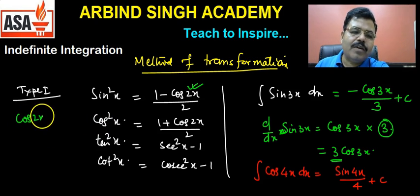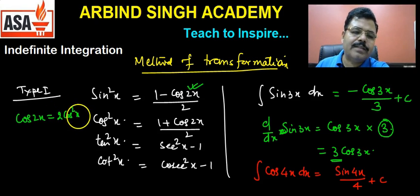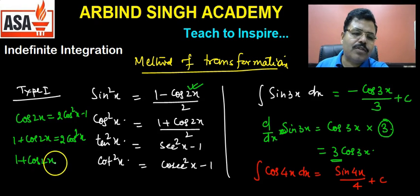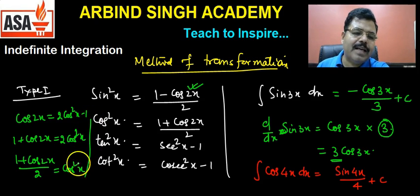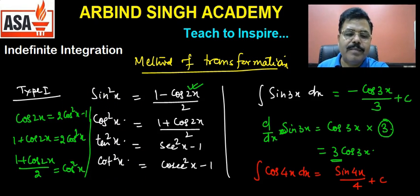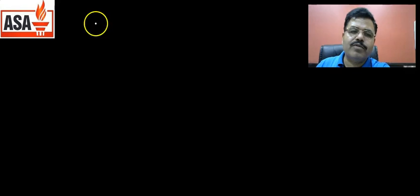Let's see why cos²x = (1 + cos2x)/2. The formula for cos2x is 2cos²x − 1. Bringing −1 to the other side: 1 + cos2x = 2cos²x. Dividing both sides by 2: (1 + cos2x)/2 = cos²x. So this is not a new formula — it is just a representation of an existing formula. We can replace one formula with another.